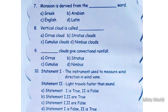First statement — the instrument used to measure wind direction is wind vane. That is correct. Statement 2 — light travels faster than sound. That is true. Light travels faster than sound. So statement 1 is true and statement 2 is also true.